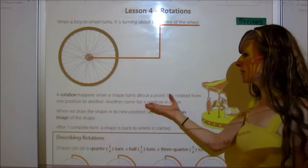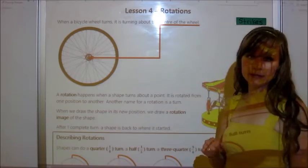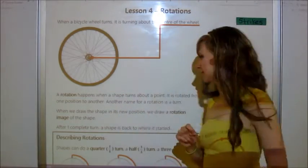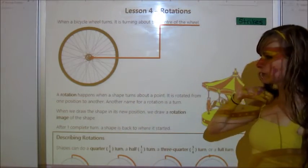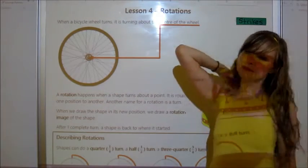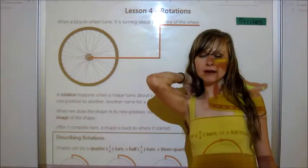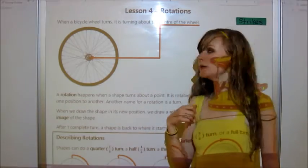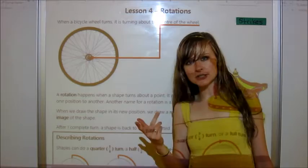A rotation happens when a shape turns about a point. So you have to have a point, and then it has to turn on that point. So it is rotated from one position to another. Another name for a rotation is a turn. So we have a flip, which is a reflection,